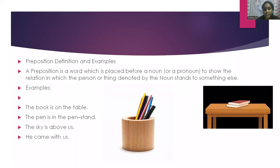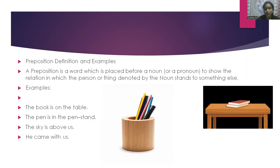A preposition is a word which is placed before a noun or a pronoun to show the relation in which the person or a thing denoted by the noun stands to something else. For example: the book is on the table, the pen is in the pen stand, the sky is above us, he came with us.